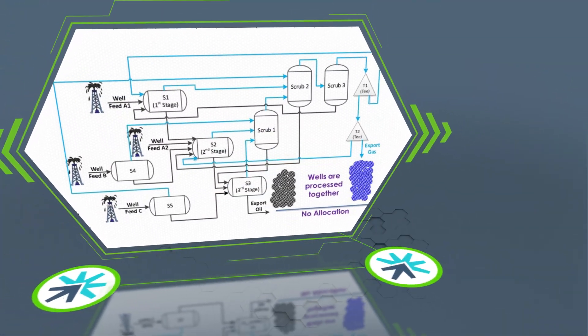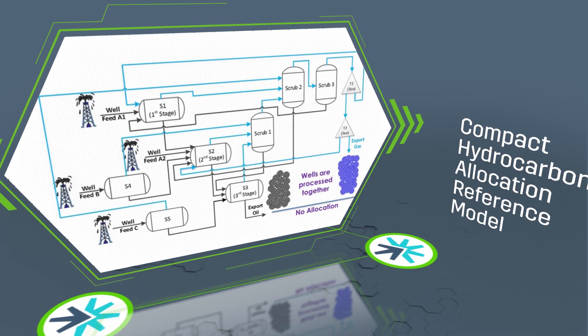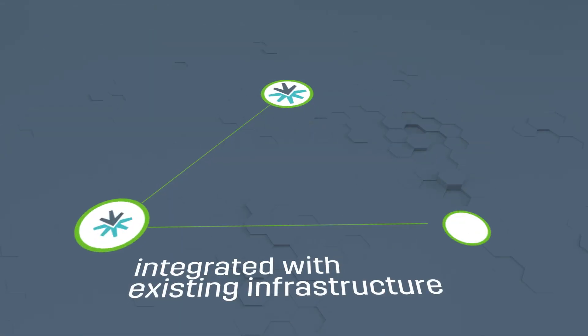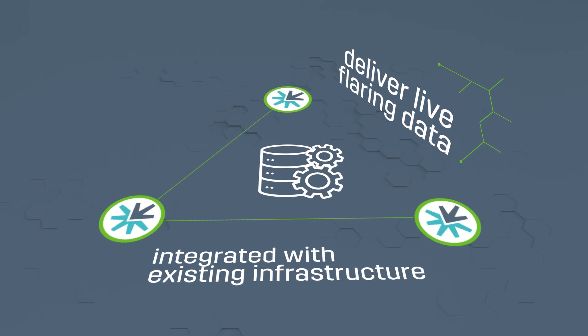Accord ESL has developed a compact hydrocarbon allocation reference model known as CHARM, a process simulation software which can be integrated with existing operational infrastructure to deliver live flaring data.